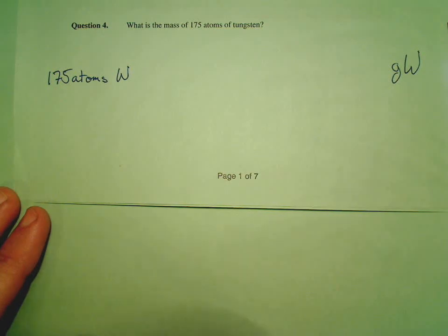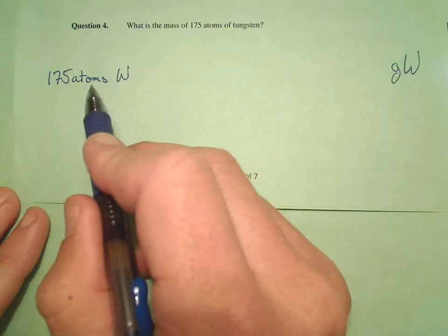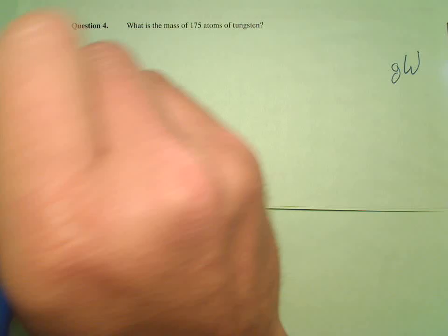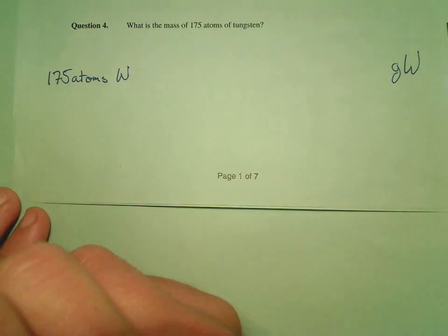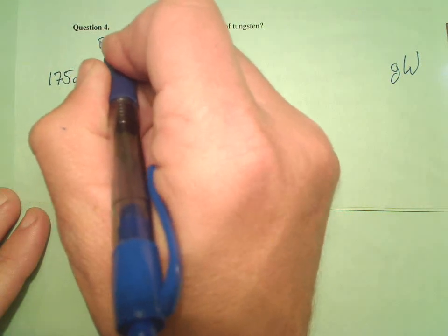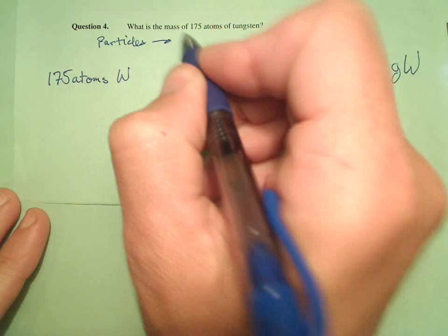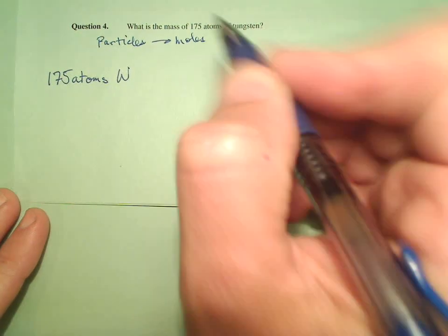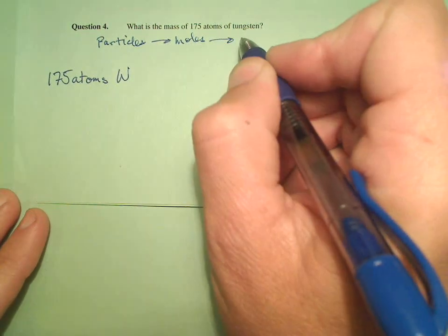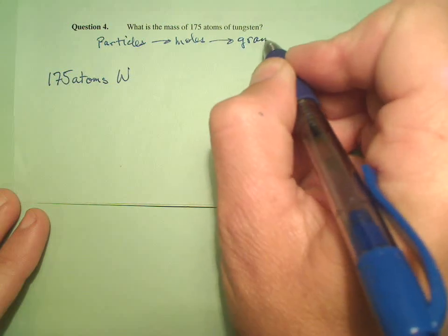Now, I fouled up the last one, let's see if I can do this one correctly. We're going from particles to grams. I was jumping the gun, that's kind of what I did up above. So we're going particles. Now, I don't know a direct particle to gram, but I can go particles to moles, and then moles to grams.